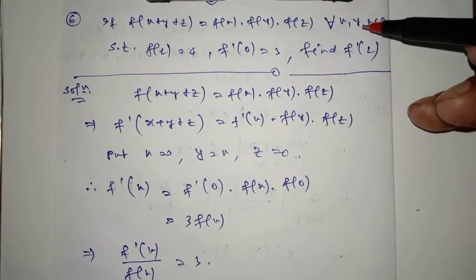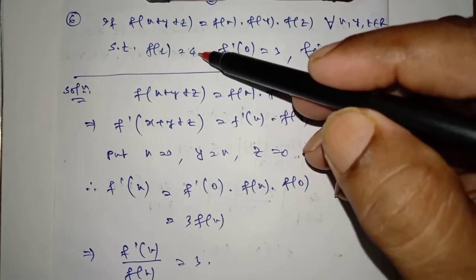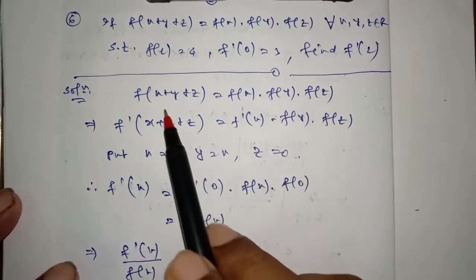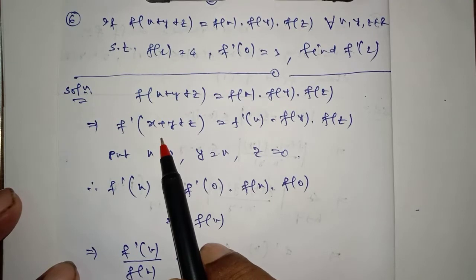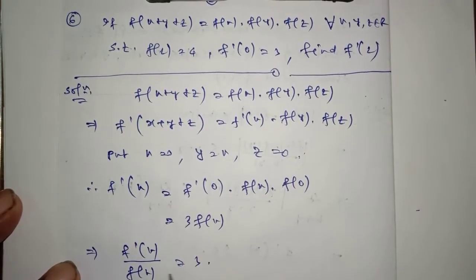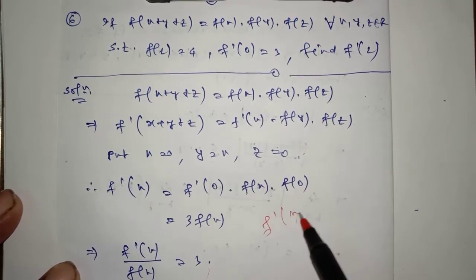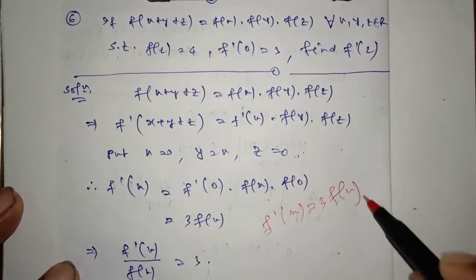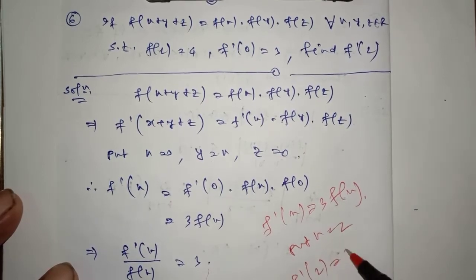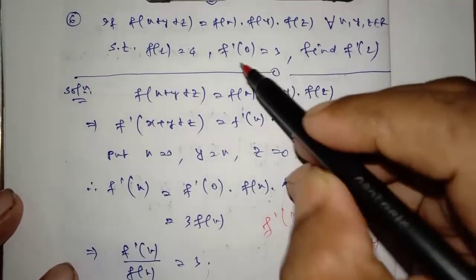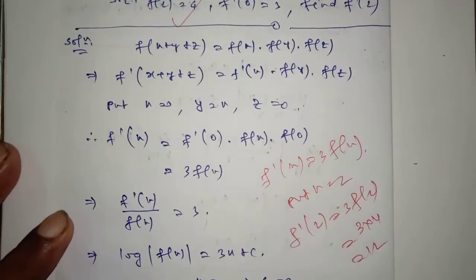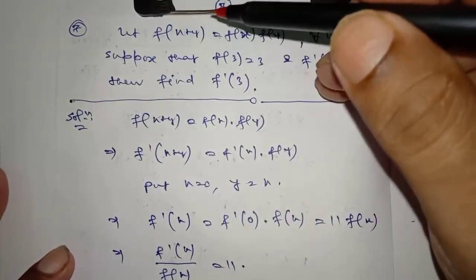Question 6: If f(x+y+z) = f(x)·f(y)·f(z) for every x, y, z, such that f(2) = 4 and f'(0) = 3, find f'(2). Differentiate with respect to x where y and z are constant. Put x = 0, y = x, z = 0. So f'(x) = f'(0)·f(x) = 3·f(x). We need f'(2): put x = 2, so f'(2) = 3·f(2) = 3·4 = 12.